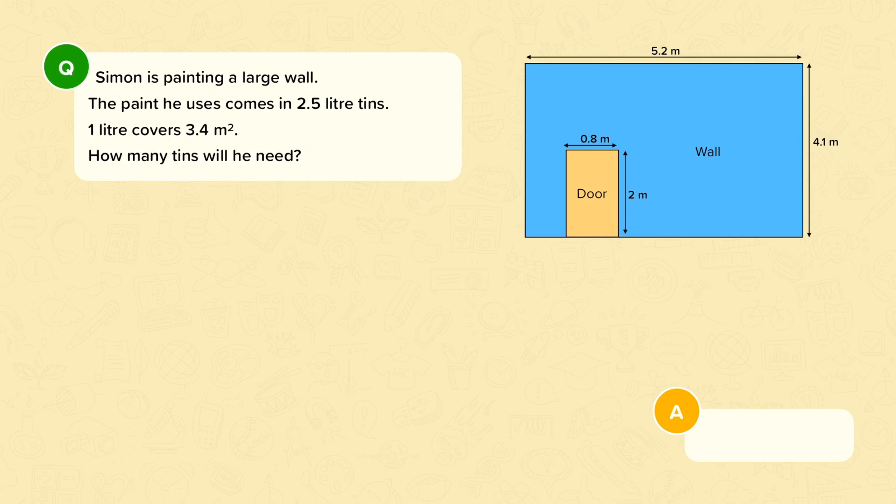In this next example we are told that Simon is painting a large wall. The paint he uses comes in 2.5 litre tins and 1 litre covers 3.4 meters squared. How many tins will he need? So we'll start here by working out the area of the wall that Simon needs to paint. And so what we want is the area of this part here, so the wall minus the door, because we don't want to paint the door. He only wants to paint the wall.